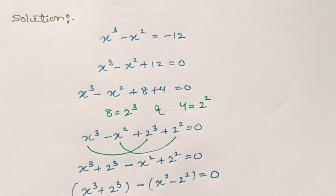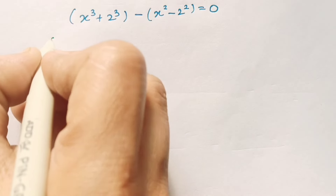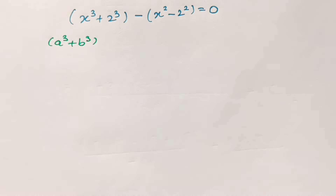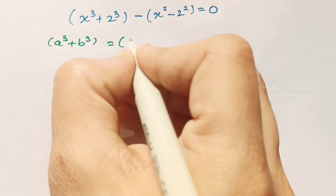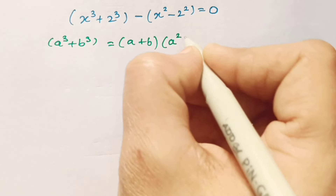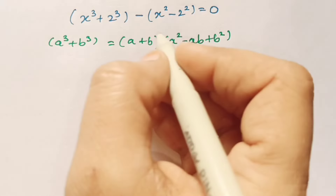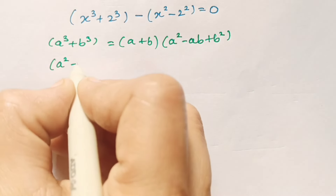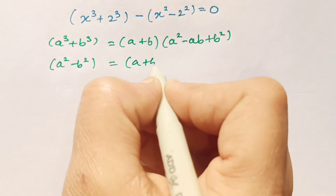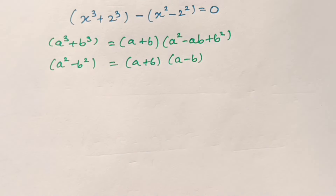In this equation we have two terms. The first one is in the form of a cubed plus b cubed. We know the formula for a cubed plus b cubed is equal to (a + b)(a squared minus ab plus b squared). The other term is in the form of a squared minus b squared, and by using the difference of squares formula we can write it as (a + b)(a minus b).